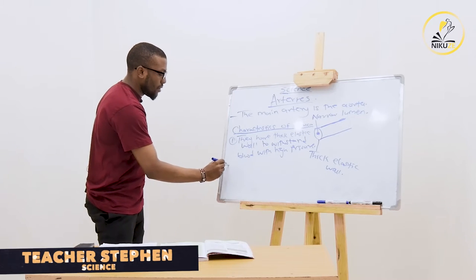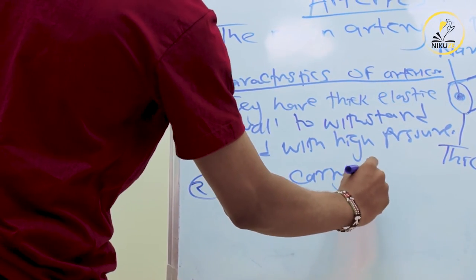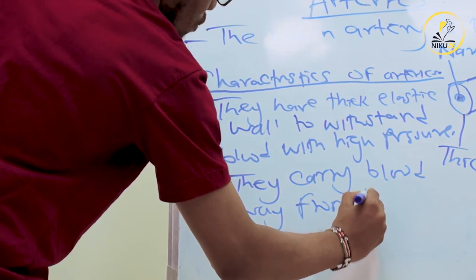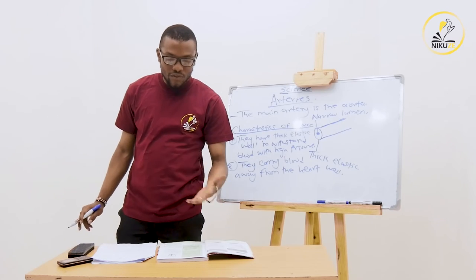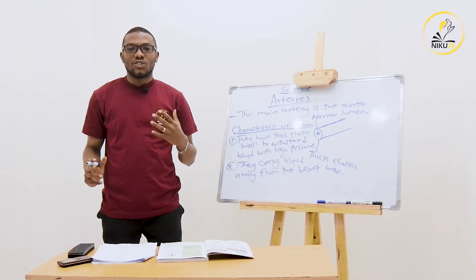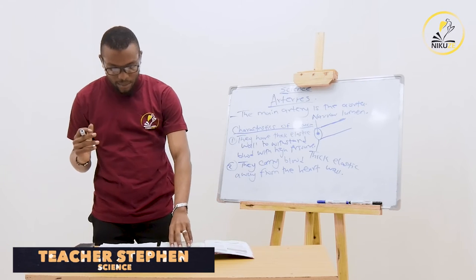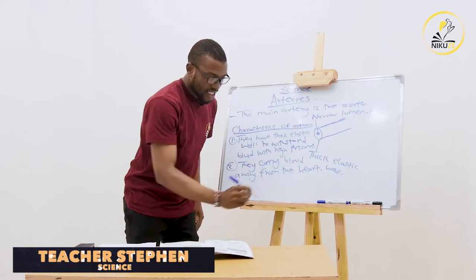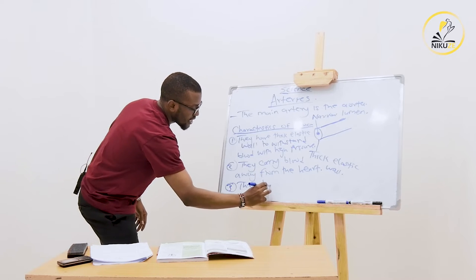Number two characteristic: arteries carry blood away from the heart. The heart is the pumping machine - it pumps the blood. The heart is found in the left part of the body. If you hold your chest you will hear a pulse - it is the blood pumping. Number three characteristic: they have pulses.